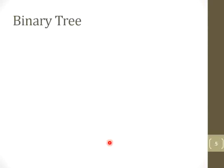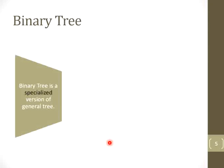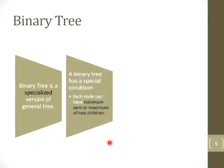First of all, you must know the concept of binary tree. The binary tree is a specialized version of a general tree. Why is it a specialized version? Because in a binary tree, there is a special condition that each node has a minimum of 0 and a maximum of 2 child nodes. It will not exceed more than 2, and 2 means binary — that's why the name binary tree is given.